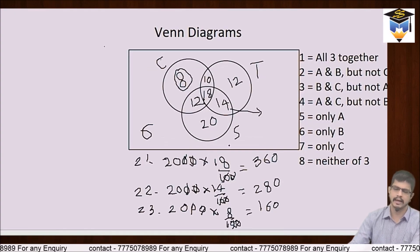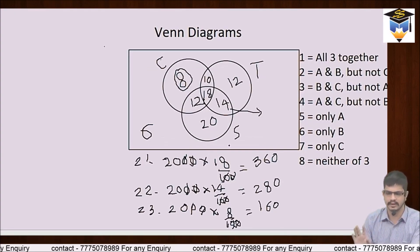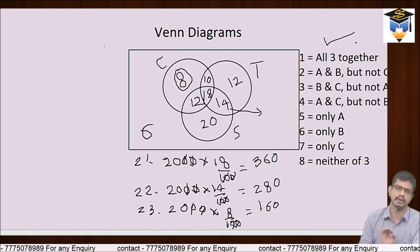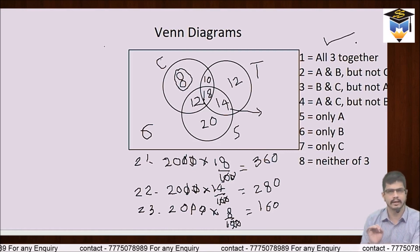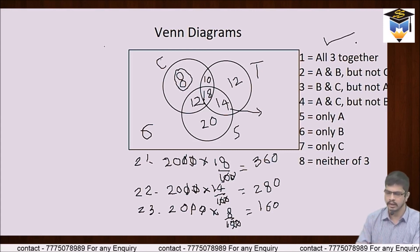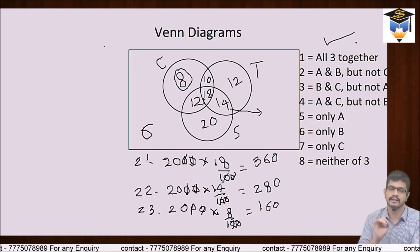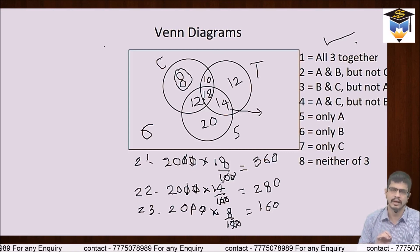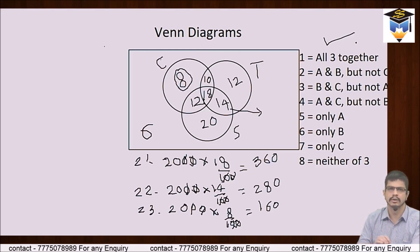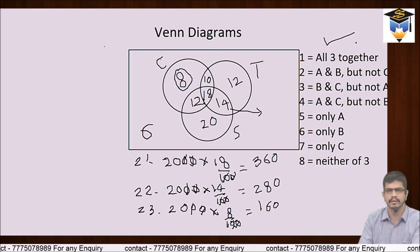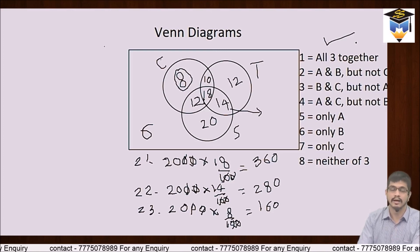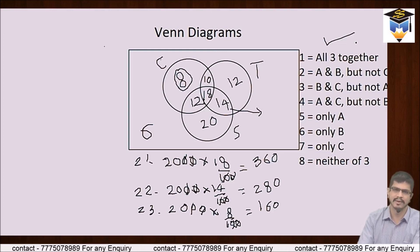As you can see, ek baar yeh 8 numbers conceptually clear ho jaayein toh aap koi bhi type ka Venn Diagram ka problem solve kar sakte ho. I hope yeh concept se aapko set theory ke Venn Diagram ke problems solve karne mein aasaani hogi. Agar aapko koi dikkat aa rahi ho, you can mention that problem in the comment section. See you until next time — all the best and take care. Aur haan, humaare channel ko subscribe karna na bhuliiye. Bye bye, take care.